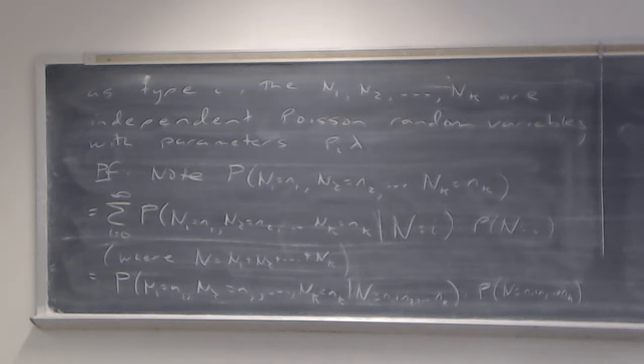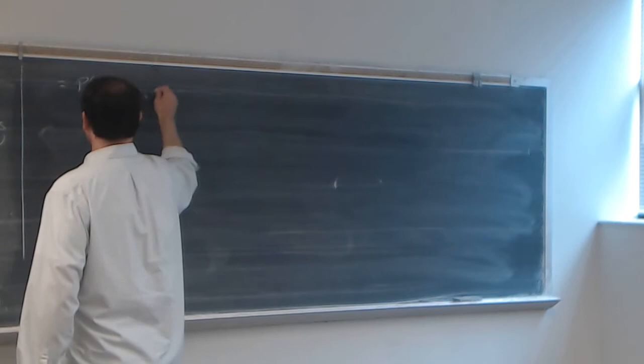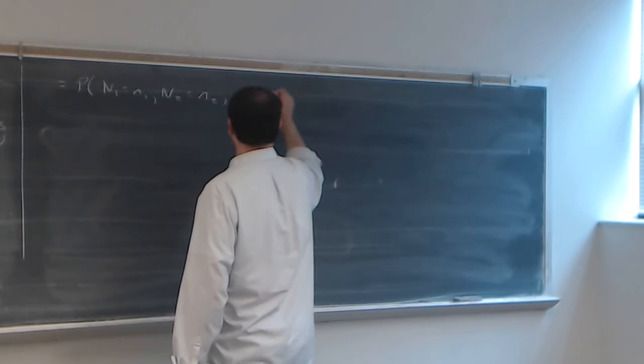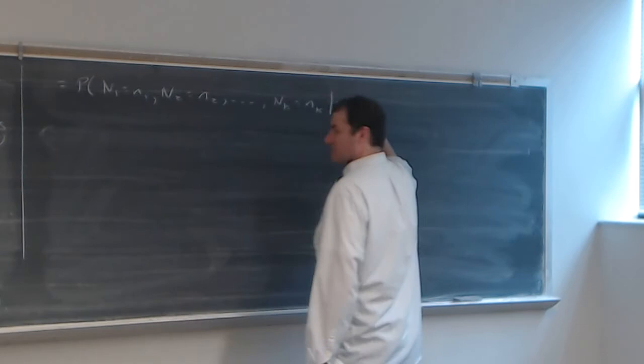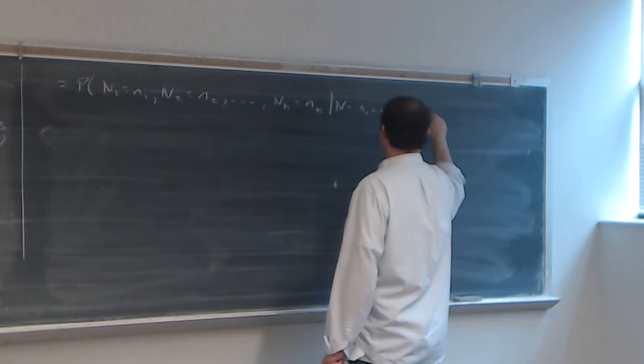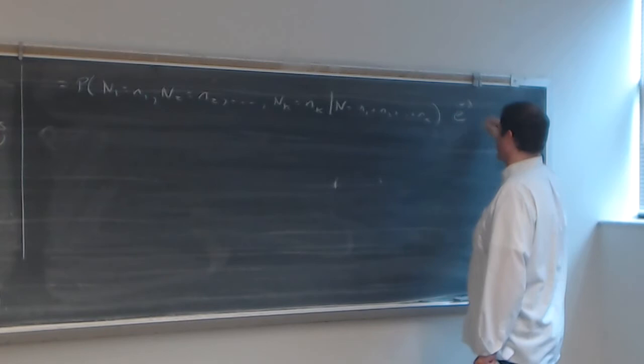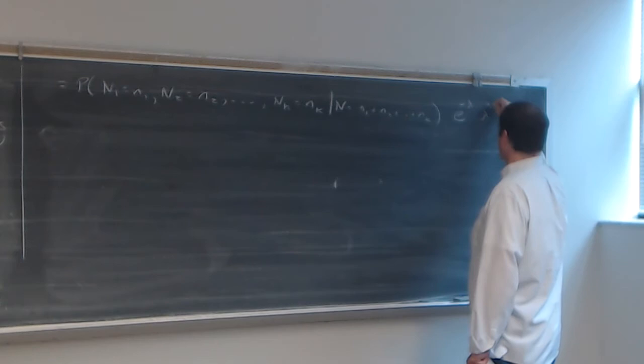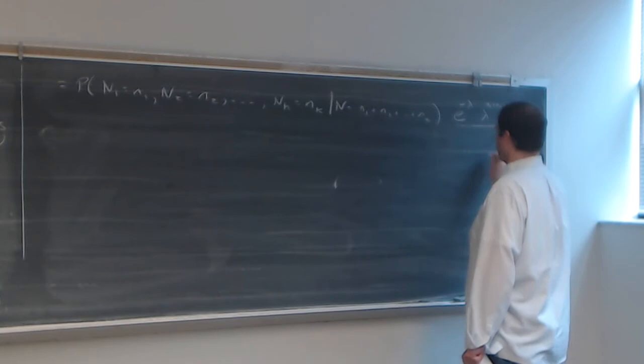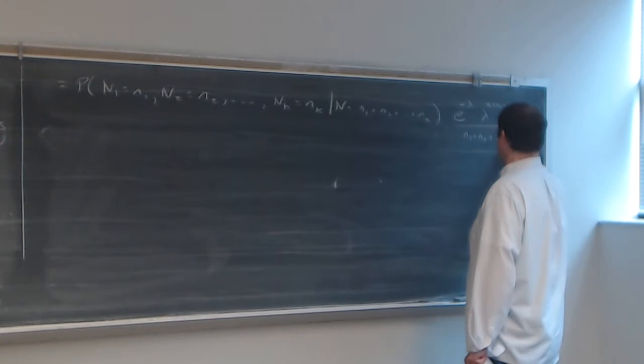We can fill in that last part because we know N is a Poisson random variable. The conditional probability is zero unless i equals the sum of the n sub i's, so the sum collapses to one term: the probability that N sub 1 equals n sub 1 through N sub k equals n sub k given N equals n sub 1 plus n sub 2 plus n sub k, times e to the minus lambda, lambda to the n sub 1 plus n sub 2 plus n sub k, all over n sub 1 plus n sub 2 plus n sub k factorial.